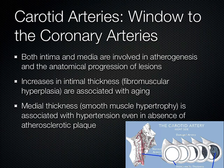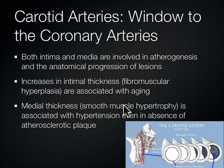Same thing with carotid intimal medial thickness, or CIMT. During atherogenesis, the intima and media are both involved in the progression of these lesions. The intimal thickness gets fibromuscular hyperplasia during aging naturally, and the medial thickness gets smooth muscle hypertrophy with long-standing hypertension. There can also be plaque between these layers causing narrowing. If we can identify it before it becomes really thick, we can gauge the patient for antilipid and antihypertensive therapies and put them in a risk category.